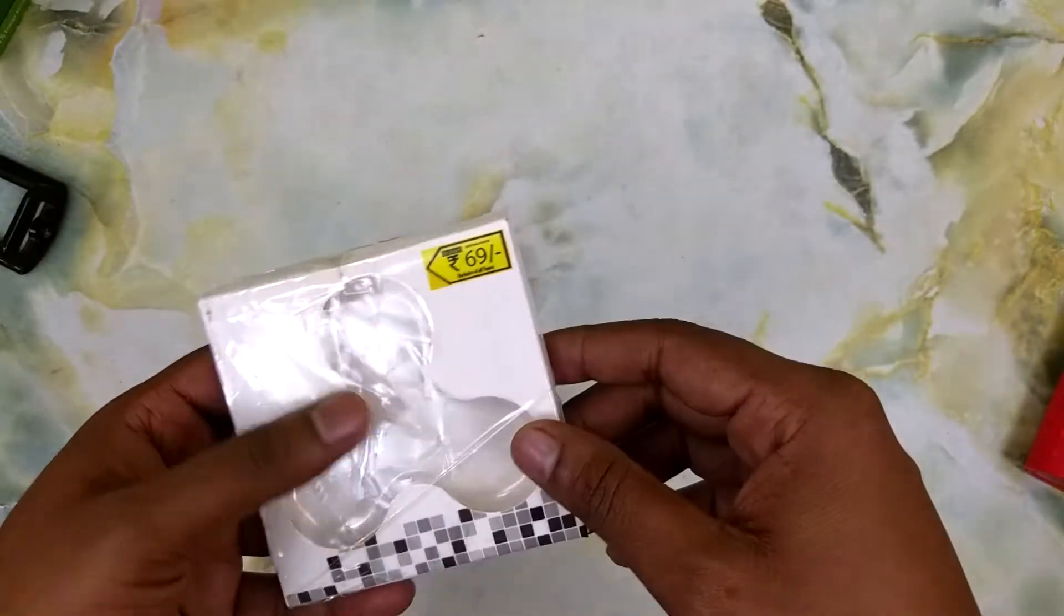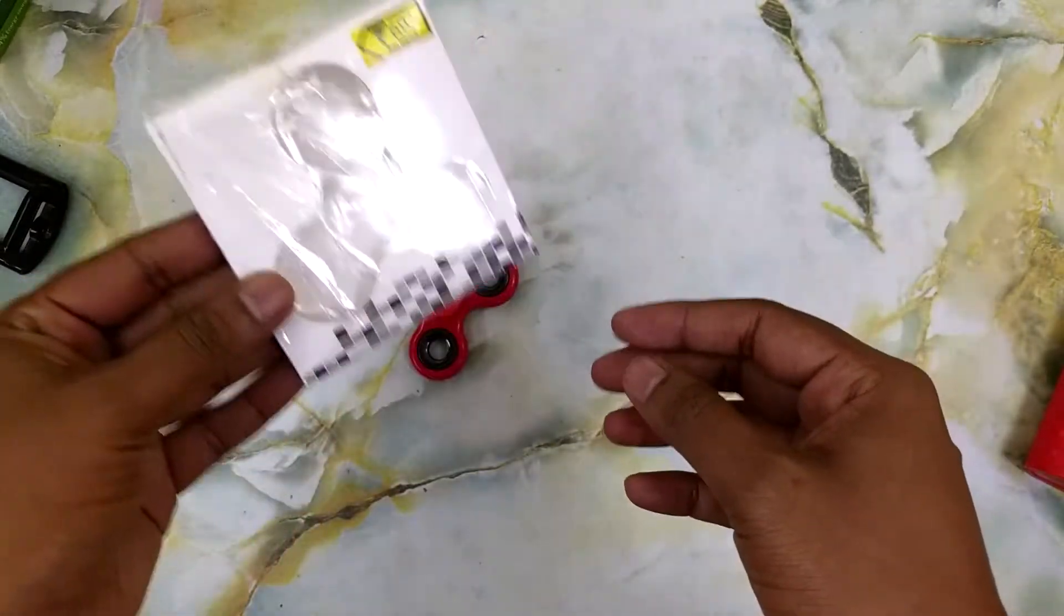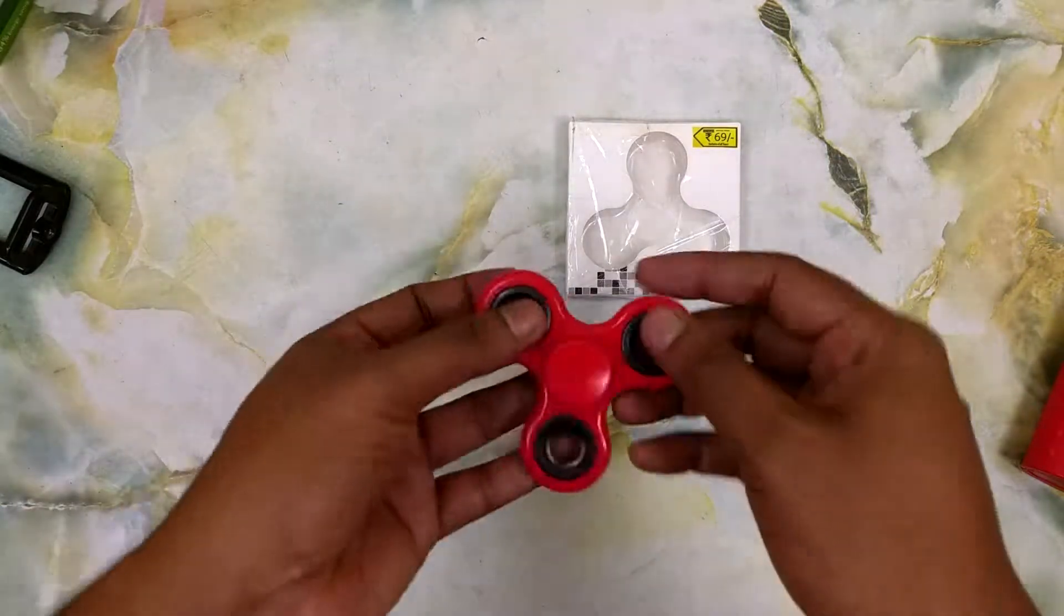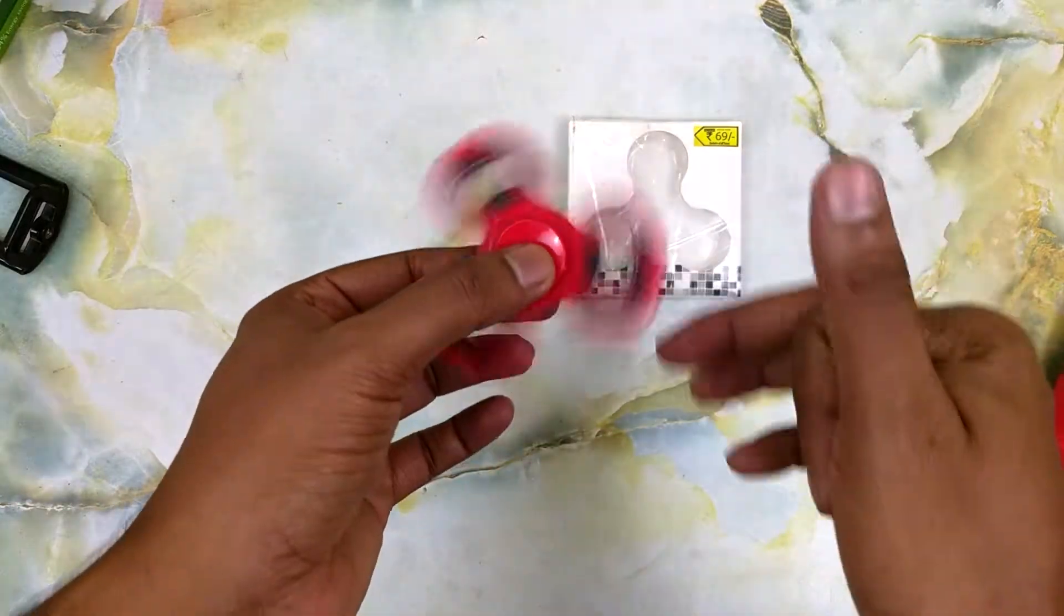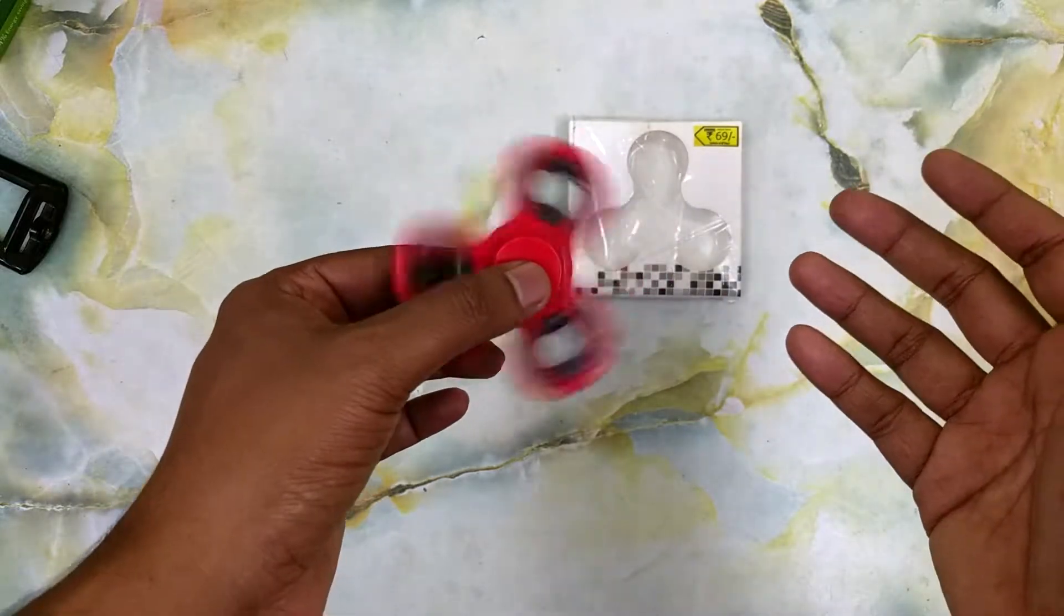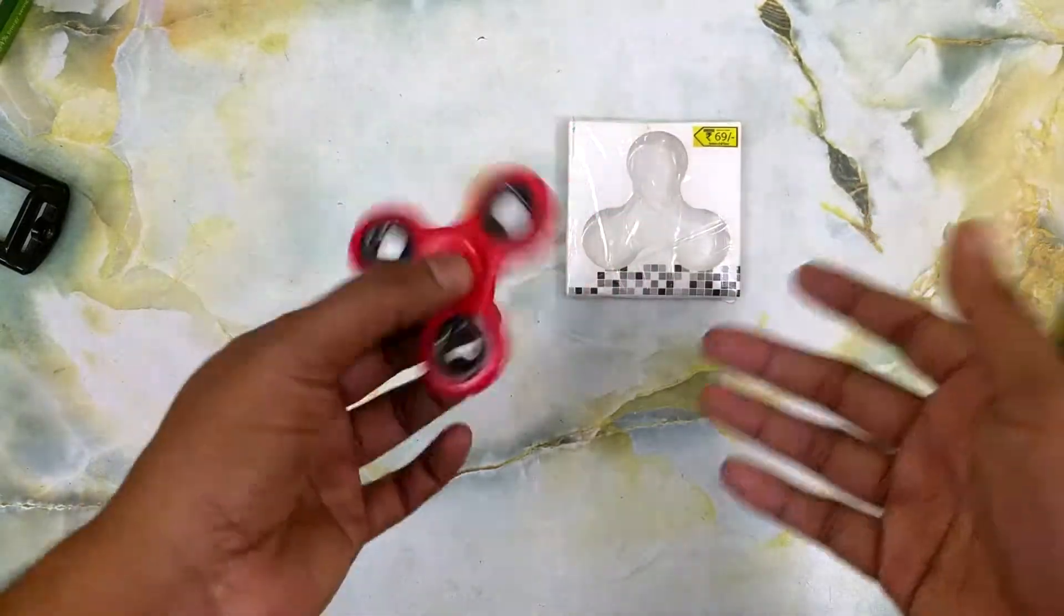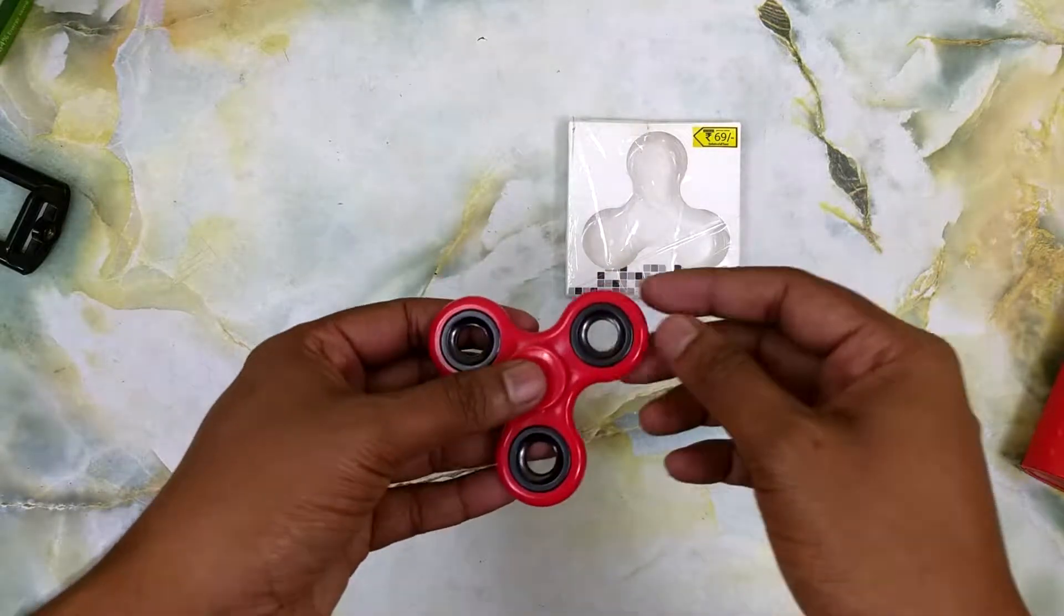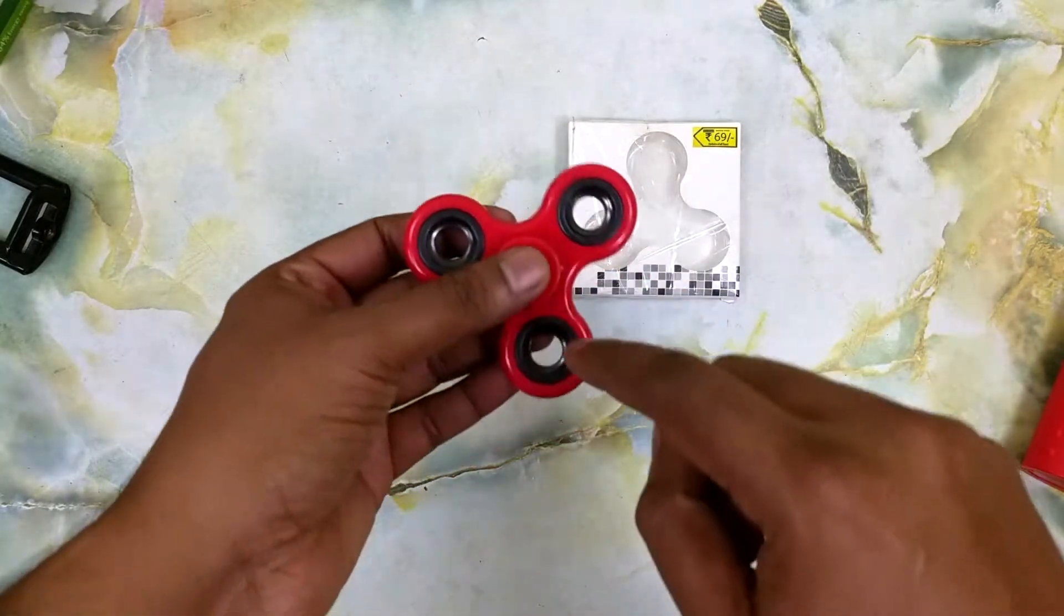So I thought it was a really good deal and I went ahead and bought this fidget spinner. This is how the spinner looks like. Like any other fidget spinner, it helps you with your fidget issues. But if you look at these three big holes right here, these are not ball bearings.